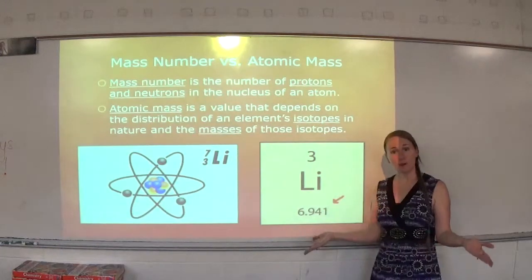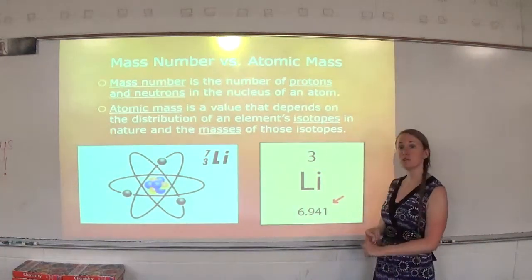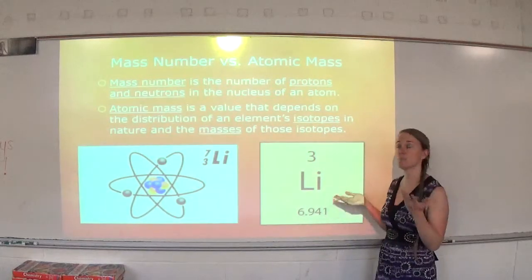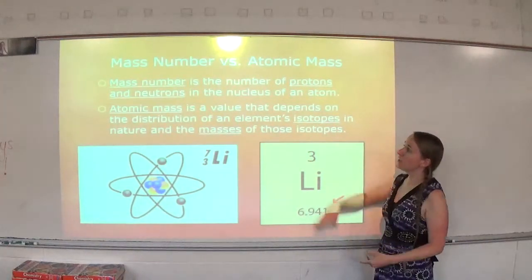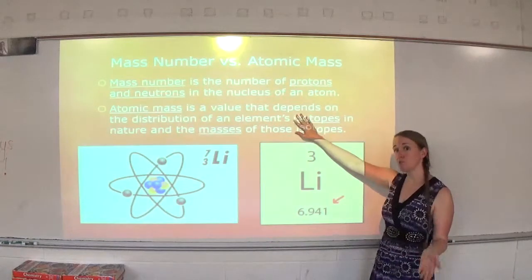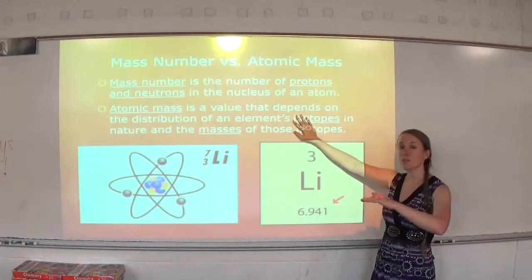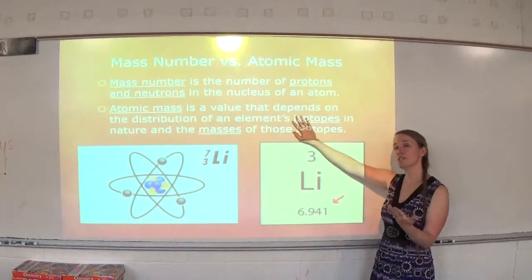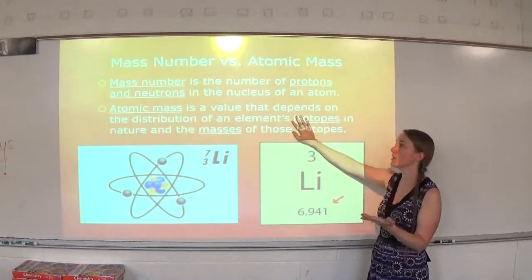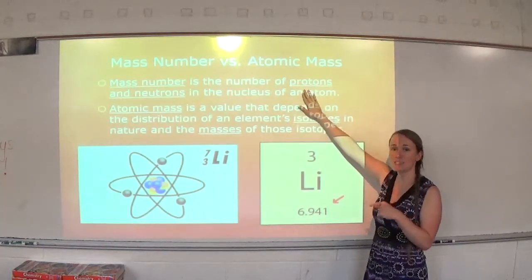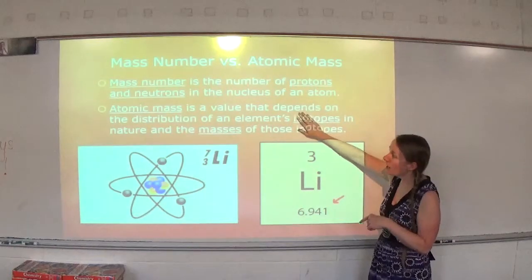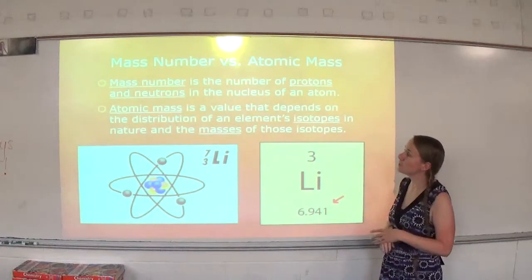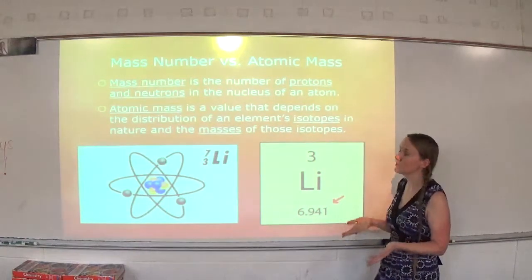Mass number is the number of protons and neutrons in the nucleus of an atom — we discount electrons because their mass is so low. But there is a difference with atomic mass. When you look at a periodic table, the number on the bottom is atomic mass, that's why it has decimal points. There's no reason we should have part of a neutron or proton, so mass number will always be a whole number. Atomic mass is the value that depends on the distribution of an element's isotopes in nature and the masses of those isotopes.